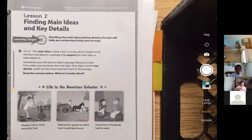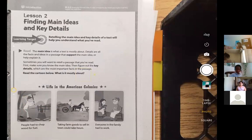Okay. Great. Thank you for wanting to. I'm right here where it says the main idea. The main idea is what a text is mostly about. Details are all the facts and ideas in a passage that support the main idea, or help explain it. Sometimes you will want to retell a passage that you've read. First, make sure you know the main idea, then figure out the key details, which are the most important facts in the passage.